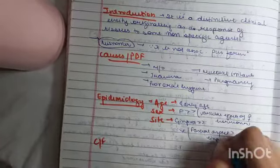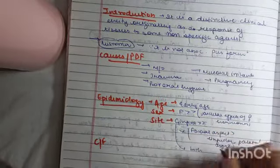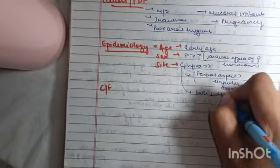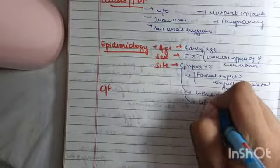Palatal aspect. Also it is seen to occur on both sides of, hope it is visible, both sides of interdental papilla. Then other sites may, it can occur in lip, tongue, buccal mucosa.